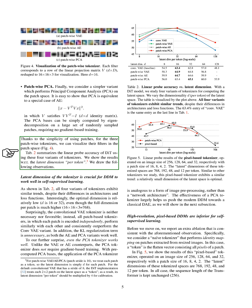The importance of the tokenizer's latent dimension in self-supervised learning for DDM cannot be overstated. As illustrated in the figure, all four tokenizer variants show similar trends, regardless of their architectural and loss function differences. Interestingly, the optimal dimension is quite low, 16 or 32, even though the full dimension per patch is significantly higher, 768. Surprisingly, the convolutional VAE tokenizer isn't necessary or even preferable. Instead, all patch-based tokenizers, where each patch is encoded independently, perform similarly and consistently outperform the Conv-VAE variant. Furthermore, the KL regularization term isn't needed, as both the AE and PCA variants perform well.